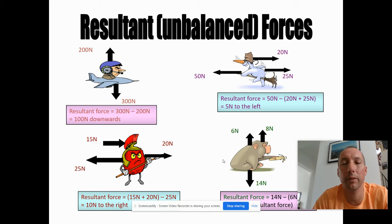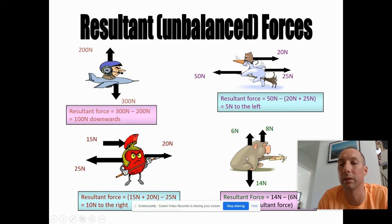How are these objects going to move? Most of you would say straight away that the gorilla at the bottom isn't going to move at all because it has zero resultant force. But that might not be true. In order to answer the question of how these objects are going to move, we have to understand Newton's first law of motion. Today we're going to look at two of Newton's laws of motion - he has three, but we'll leave the third for another day.